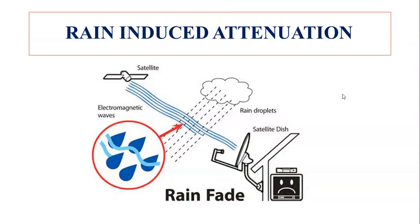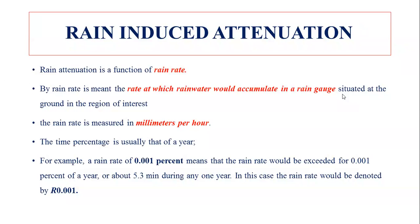The rain droplets disturb the signal, and because of this deviation, some attenuation is created — that attenuation is called rain-induced attenuation. This attenuation depends upon the shape of the rain droplets. Rain attenuation is also a function of rain rate, meaning if intense rain is present, the signal attenuation is very high.